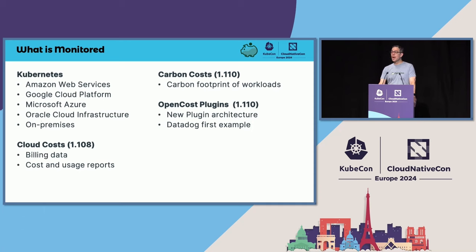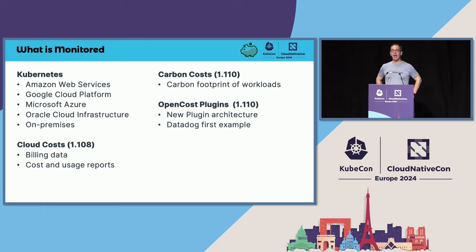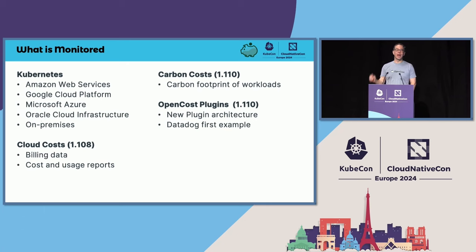Our current release is 1.109. In 1.108, we introduced cloud costs. As far as I know, this is the first open source implementation of going and processing your AWS, GCP, and Azure cost and usage reports. Your cloud providers are pushing out a huge amount of JSON or CSVs of how you're actually spending on cloud costs. These are large and complex — I've seen terabyte-sized files from some customers. Cloud costs gives you the ability to parse those and actually put an API in front of them for reporting. As far as I know, not available anywhere else.